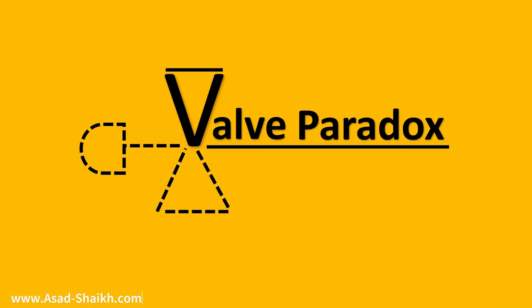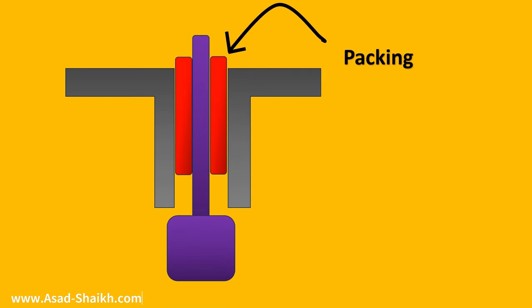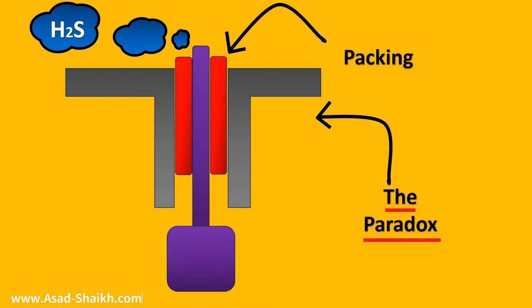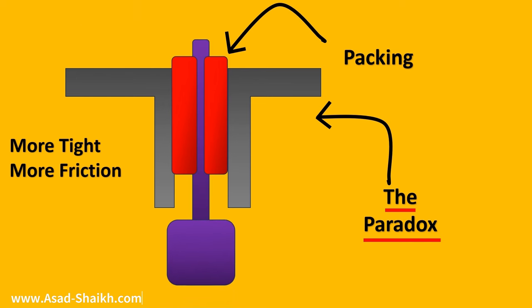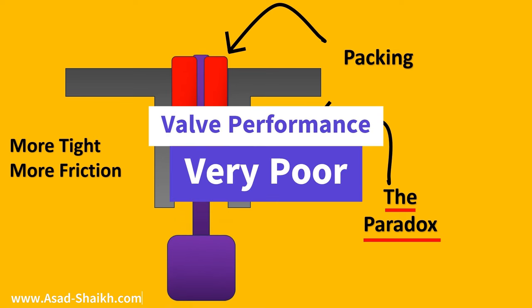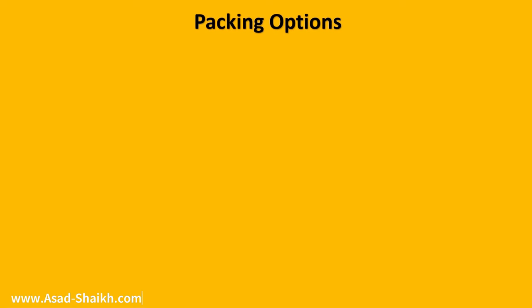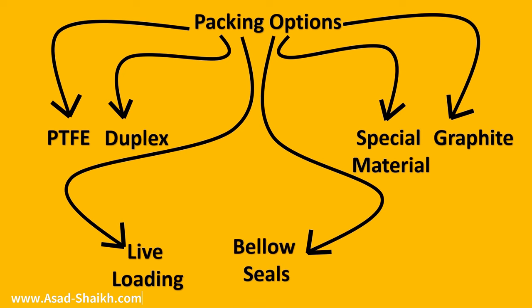Finally, there is something very important called the valve paradox. Looking at a control valve, you can see the bonnet and the packing shown in red. The valve paradox occurs when the control valve is working and regulating flow dynamically. When fugitive emissions happen and you decide to make the packing tighter, emissions reduce — but the tighter packing creates more friction, causing the valve to function with very low performance. However, if you reduce the packing to improve performance, fugitive emissions increase again. Engineers had to develop creative solutions, leading to dynamic packing options: duplex packing, special materials, special V designs, live loading, and bellow seals.